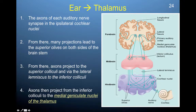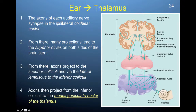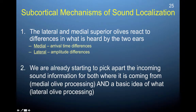The main thing to understand here is that this is where information starts to be combined from multiple ears, so that you can calculate depth perception — locating where a sound is coming from in space. To do that, you need slight differences between your ears. The lateral and medial superior olives react to differences in what is heard by the two ears: the medial responds to arrival time differences, and the lateral to amplitude differences.